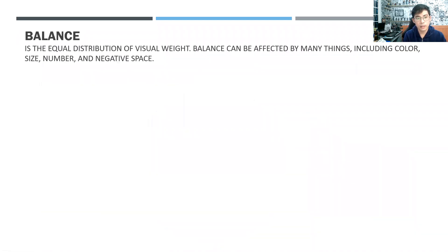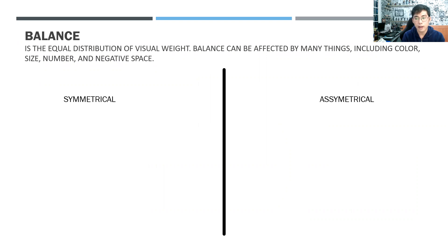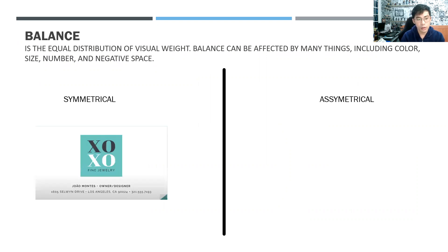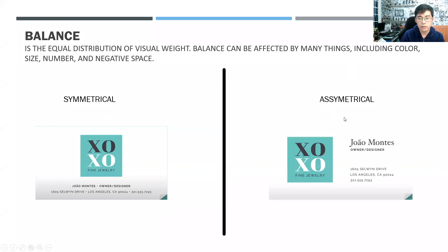Balance is the equal distribution of visual weight. Balance can be affected by many things including color, size, number, and negative space. We have symmetrical and asymmetrical balance. In a symmetrical design, if we divide it in two, both sides are equal in weight. The difference with asymmetrical balance is that even when separated, the visual weight is still the same on both sides.